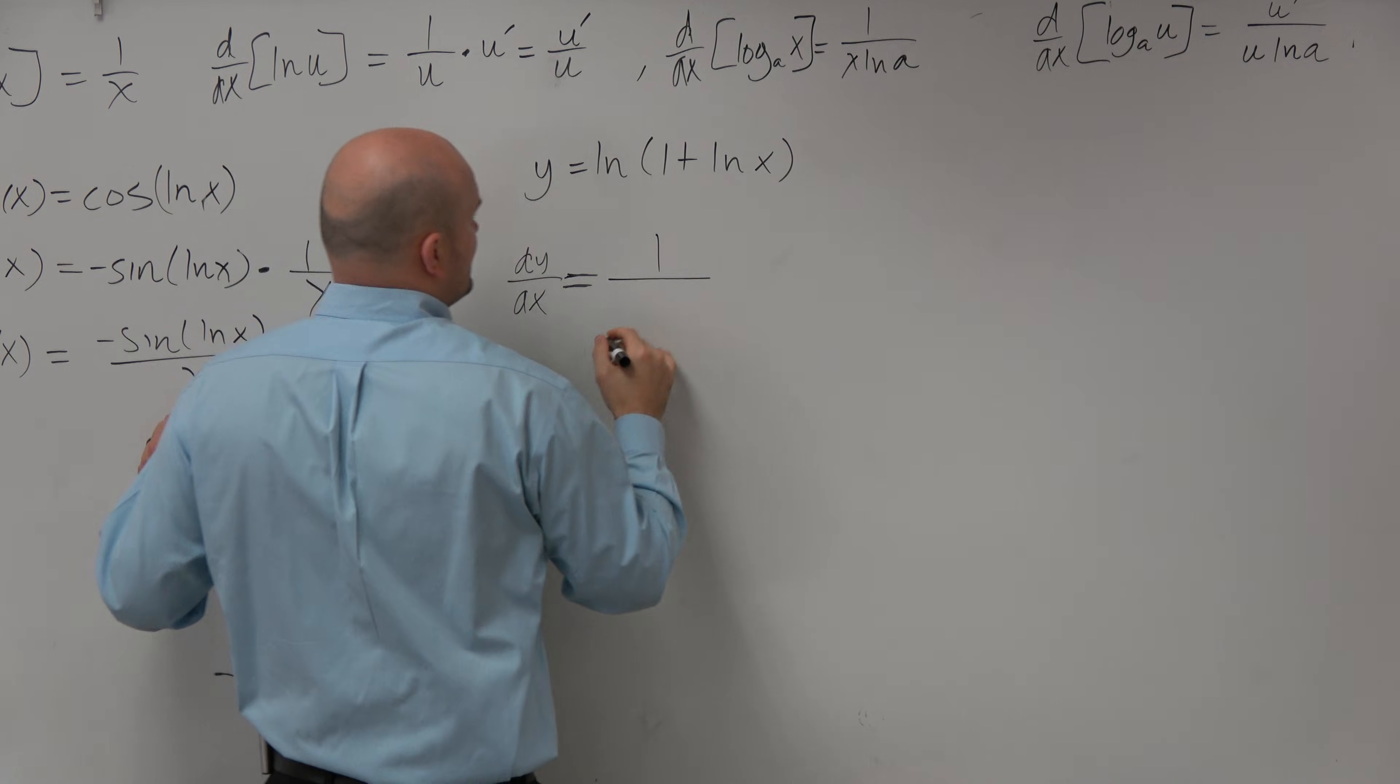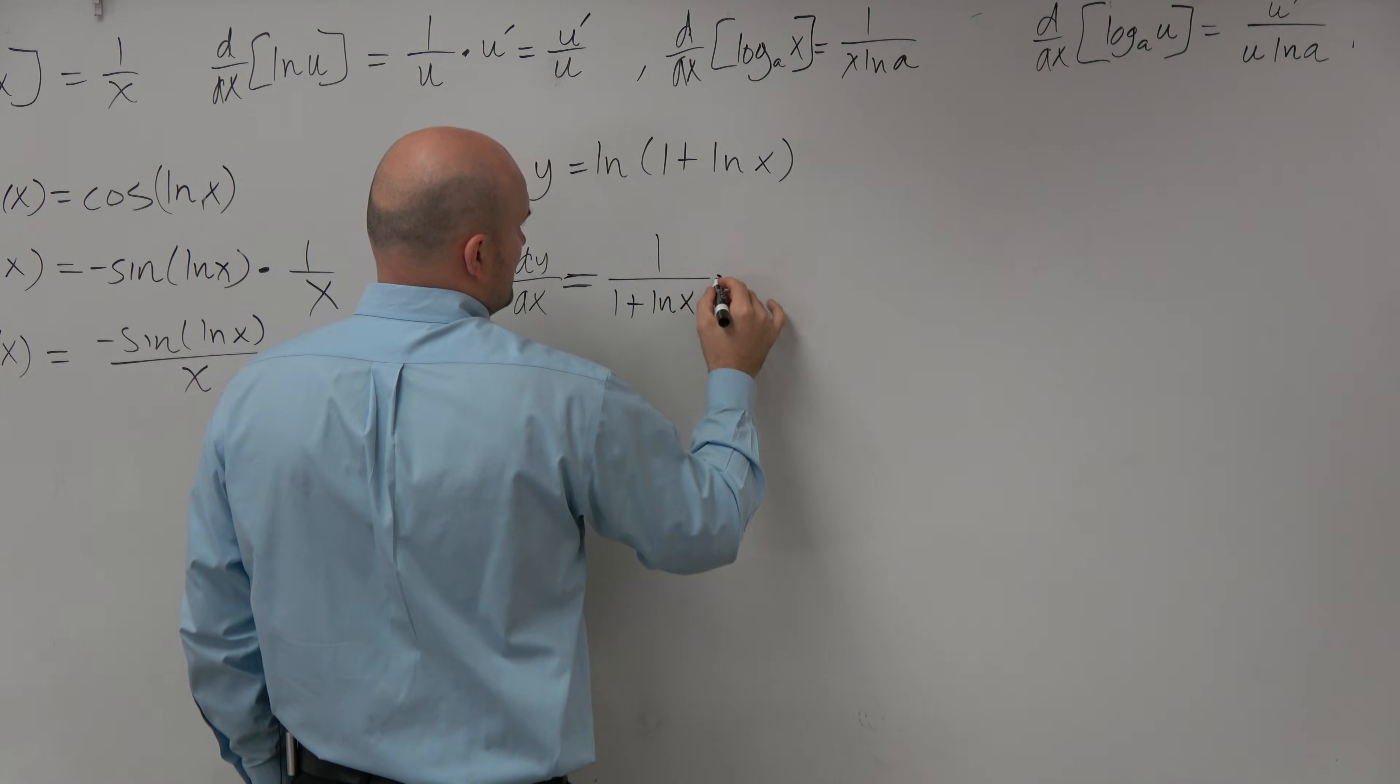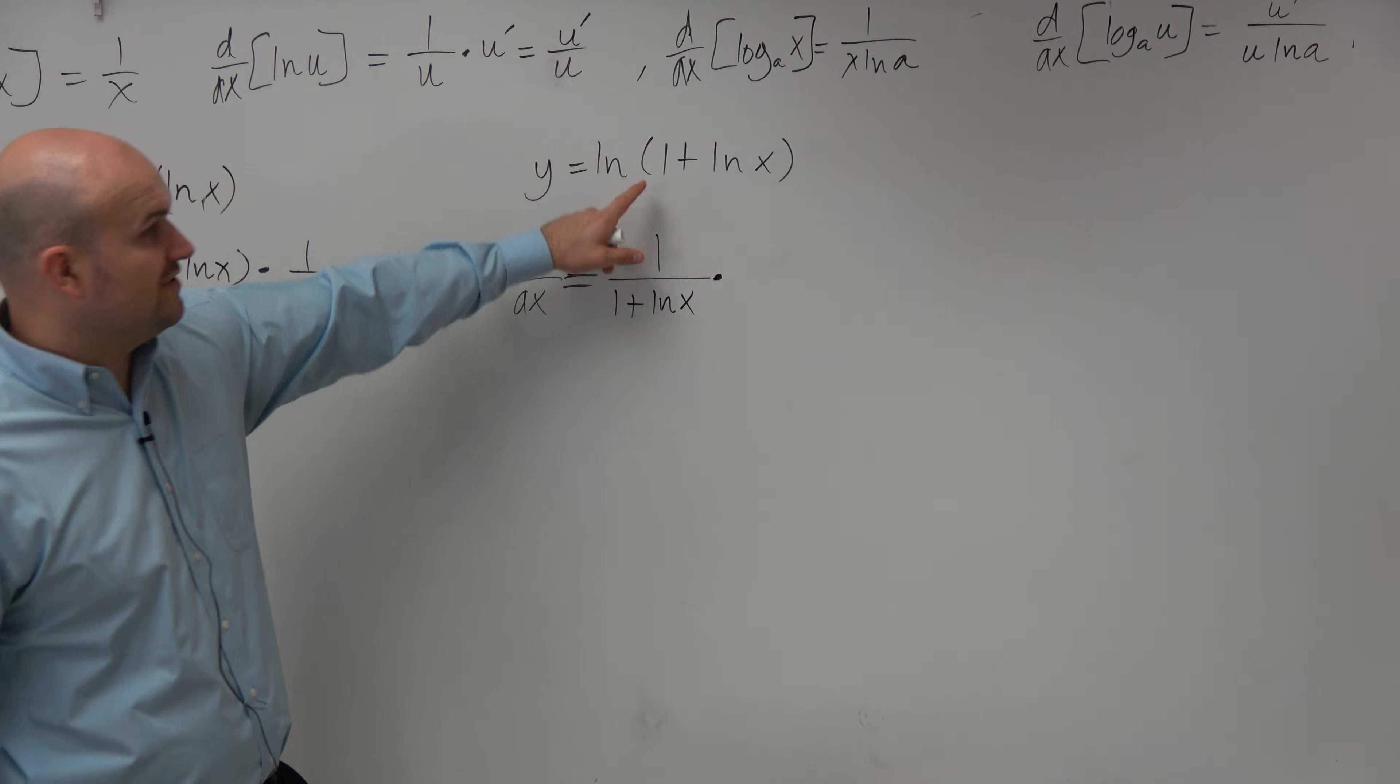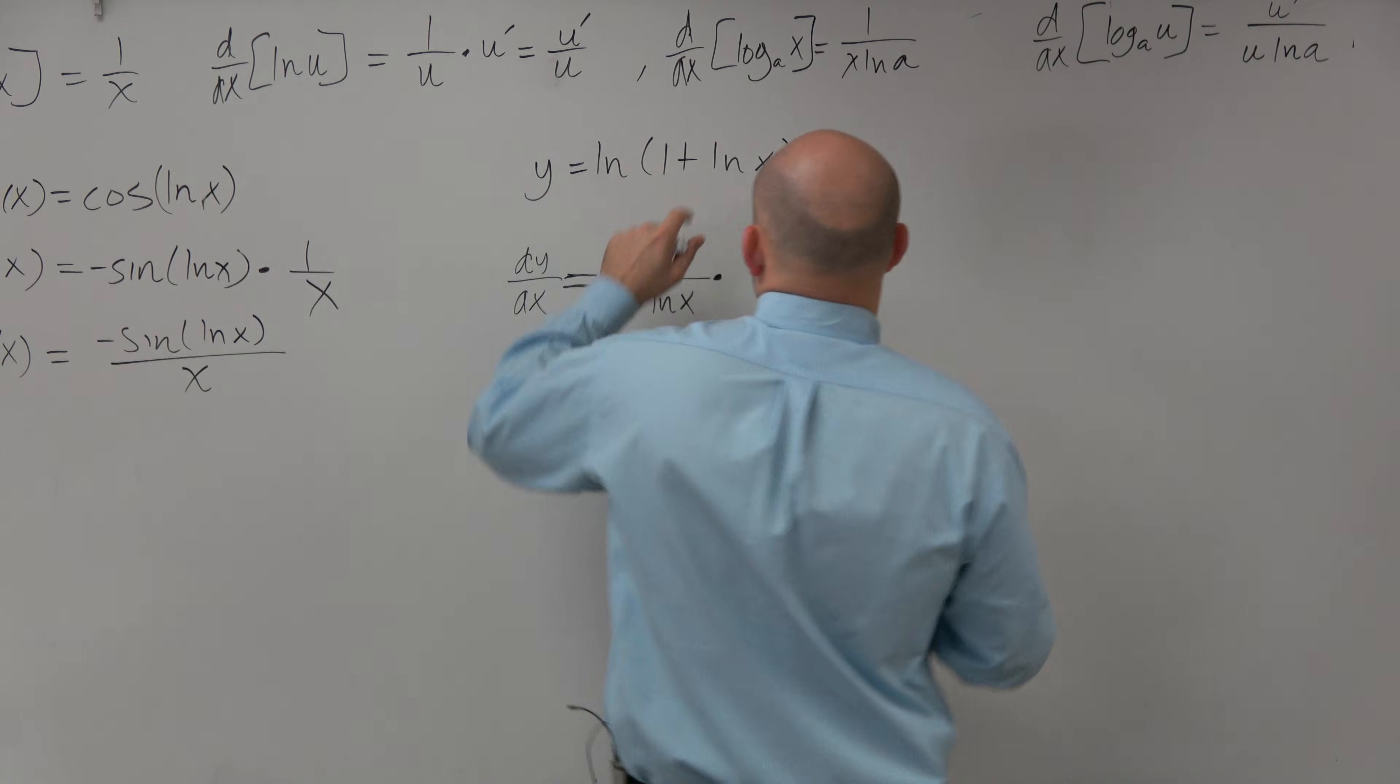So I could rewrite this as 1 over u, which is 1 plus ln of x, times the derivative of u, which is really just going to be, derivative of this is really just going to be 1 over x.